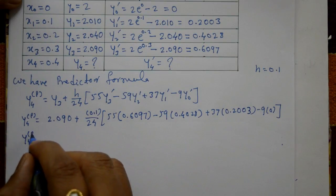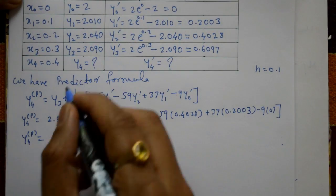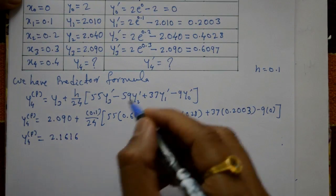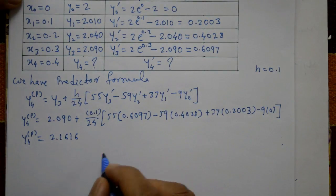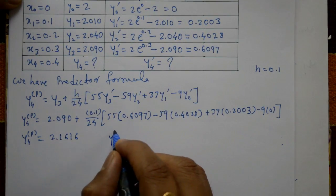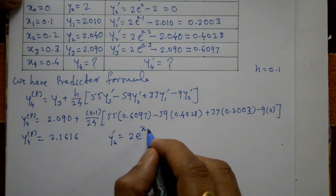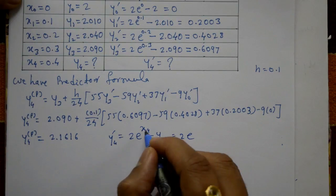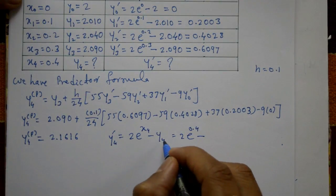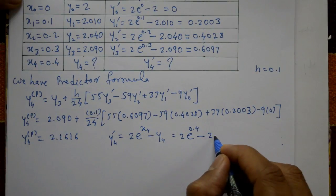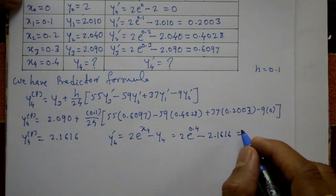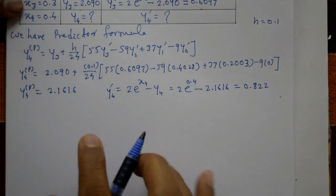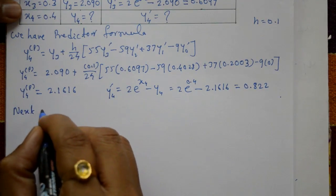The predictor formula gives y4_p equal to 2.1616. Next, we find y4-dash using the predictor value: y4-dash equals 2 into e raised to (x4 minus y4), substituting x4 = 0.4 and y4 = 2.1616, giving y4-dash equal to 0.8222.